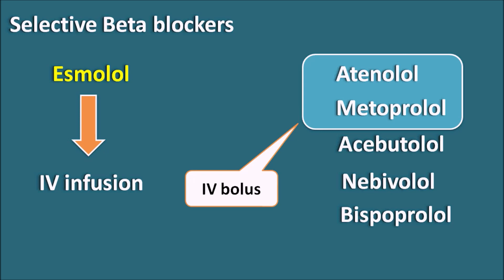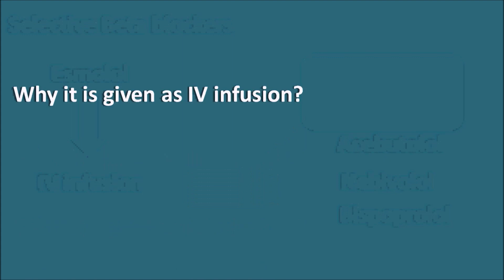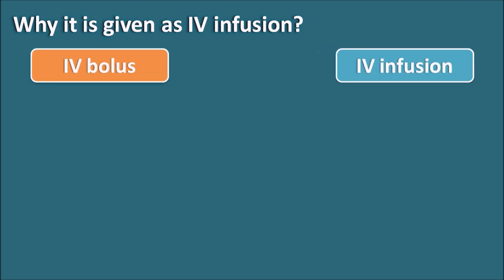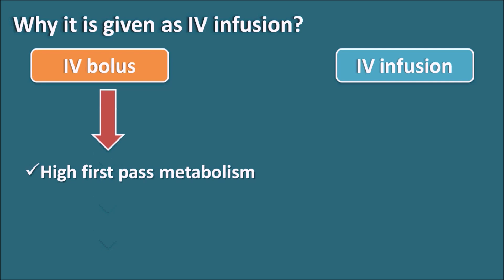So in this video, let us see why esmolol is given by IV infusion. Drugs can be given by IV route as IV bolus or as IV infusion. When we give drugs by IV bolus administration, it may be because a drug has high first-pass metabolism and is not suitable for the oral route, or because we require immediate drug action, particularly in emergency conditions.